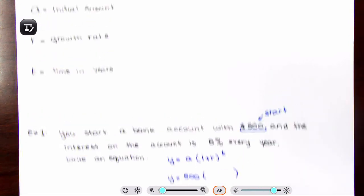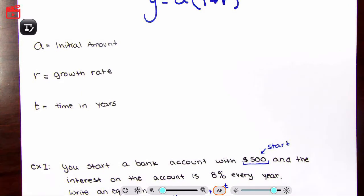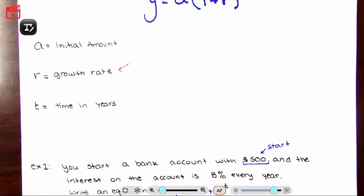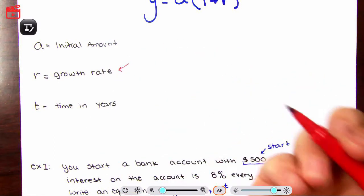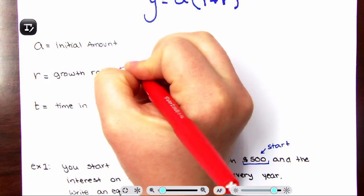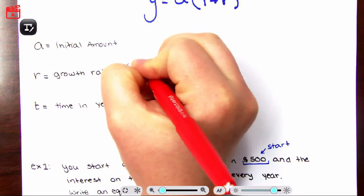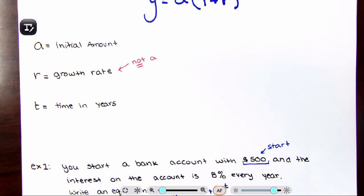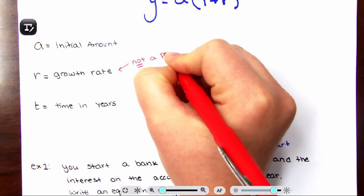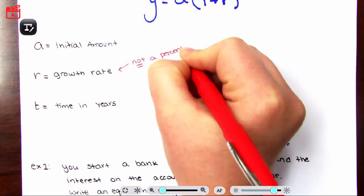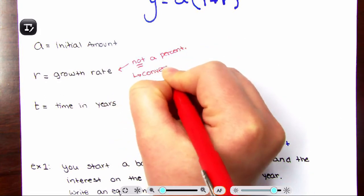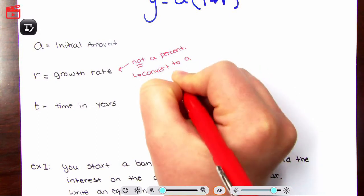Now before we continue, I'm actually going to go back up here. This is super important that I forgot to mention. Your growth rate needs to be converted. So your R is not a fraction, it's not a percent. You need to convert to a decimal.